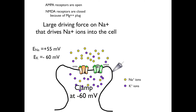Let's trace the currents that flow through the open AMPA receptors when the membrane is clamped at minus 60 millivolts. There is a large influx of sodium because of the large driving force acting on sodium ions. But there is no net flow of potassium because the membrane potential is clamped at the potassium equilibrium potential.